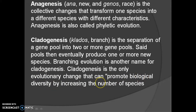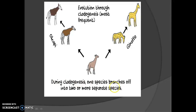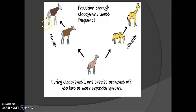Cladogenesis is the only evolutionary change that can promote biological diversity by increasing the number of species. So in cladogenesis, the number of species increases and there is biological diversity. But in anagenesis there is no increase in the number of species and biological diversity is not maintained. Cladogenesis is more frequent, while anagenesis is very rare or less common.